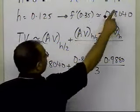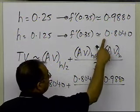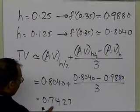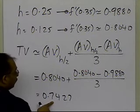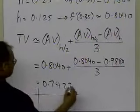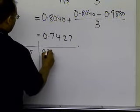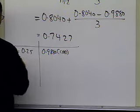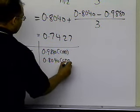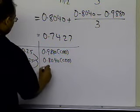Summarizing in a table: with h = 0.25 using the central divided difference scheme, we got 0.9880; with h = 0.125 using the central divided difference scheme, we got 0.8040; and applying the Richardson extrapolation formula to those two values, we get 0.7427.